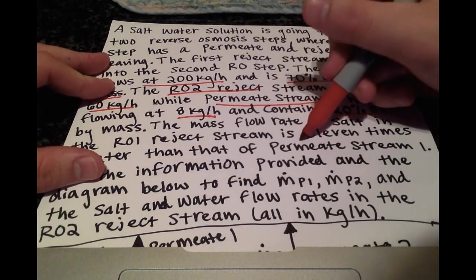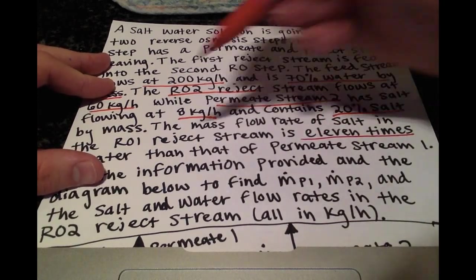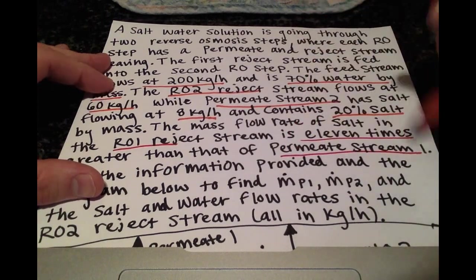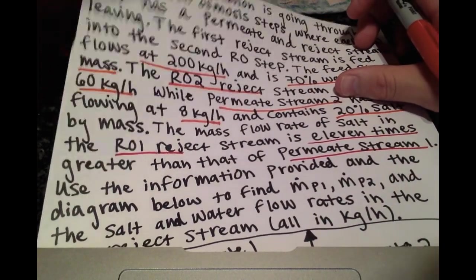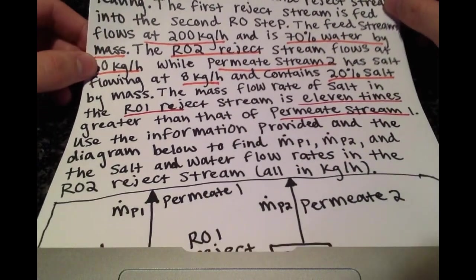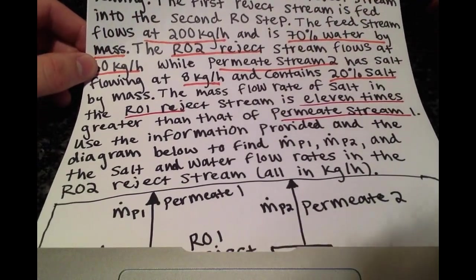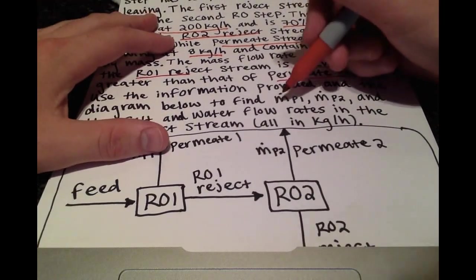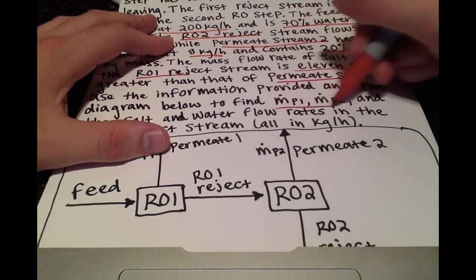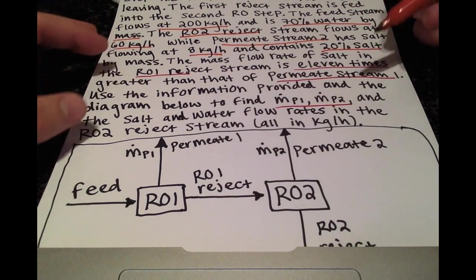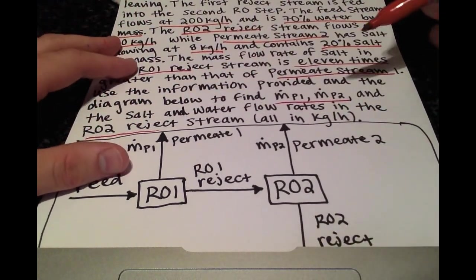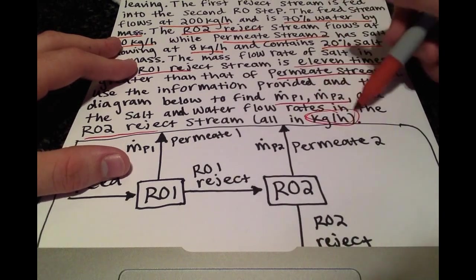This is a useful relationship. They tell us to use the information provided and the diagram below to solve for MP1, MP2, and the salt and water flow rates in the RO2 reject stream, all in kilograms per hour.